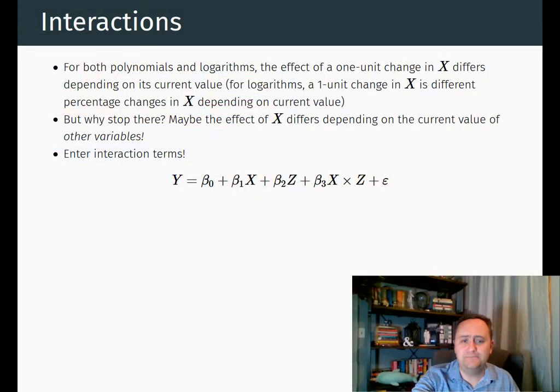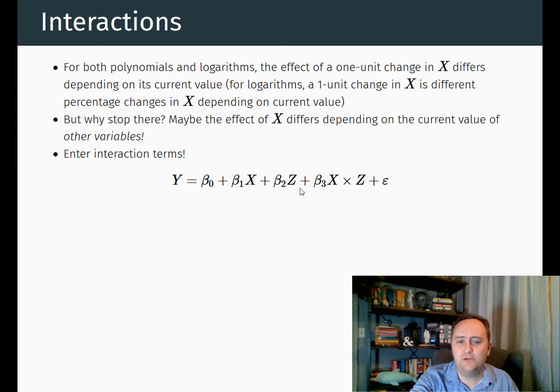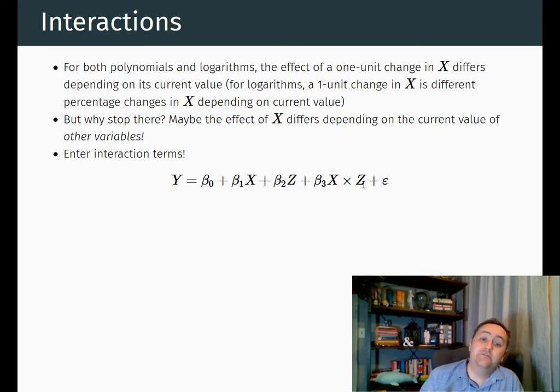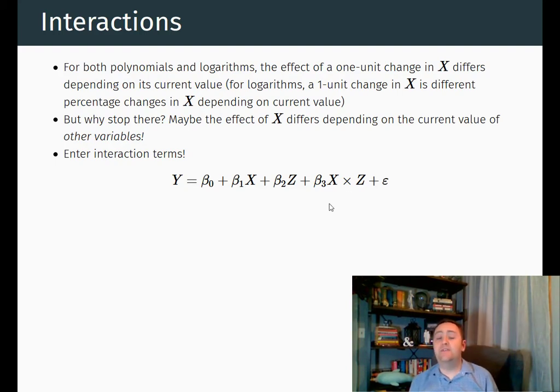So what is an interaction? You include two variables multiplied together — interacting the variables by multiplying them — and typically we will also include the variables by themselves, but we are also including them as interactive. Here's an example of a regression equation that includes an interaction term: y regressed on x and z as normal, but we also have x times z as its own variable. We call this the interaction term, and beta 3 is the coefficient on it.